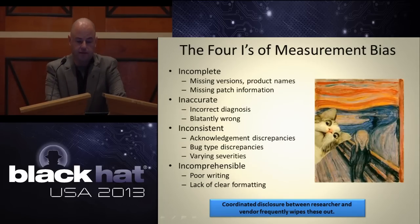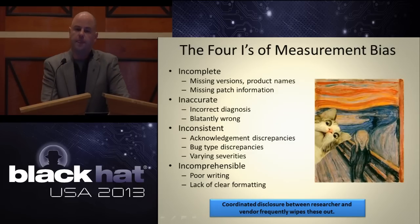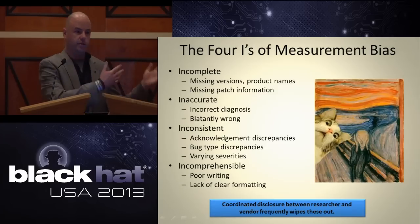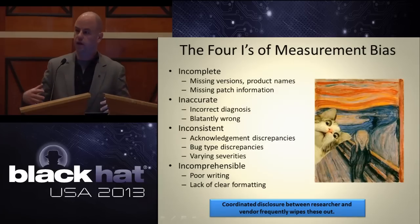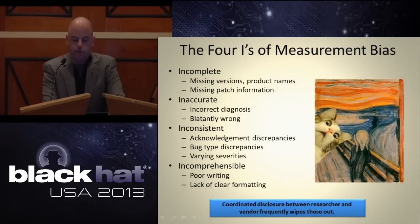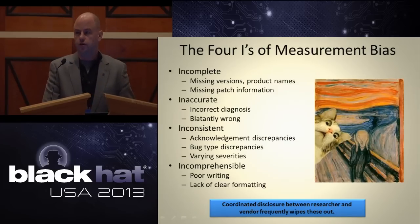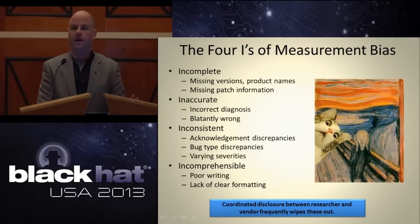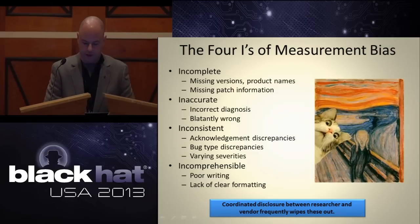The four I's of measurement bias: incomplete, inaccurate, inconsistent, incomprehensible. Every day when VDBs are measuring, collecting, and aggregating vulnerability information, this is what we're up against. One thing we've consistently seen is that when a researcher works with a vendor, a lot of that goes away — of course there are all kinds of other challenges and hurdles involved.